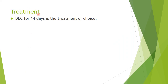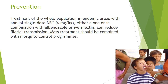The treatment for tropical pulmonary eosinophilia is diethylcarbamazine for 14 days. For prevention, the entire population in endemic areas is treated annually with a single dose of DEC 6 mg/kg, either alone or combined with albendazole 400 mg and ivermectin 200 mg, with DEC 300 mg. This reduces filarial transmission and is combined with mosquito control programs such as distributing mosquito nets.